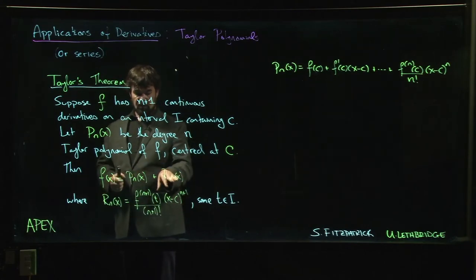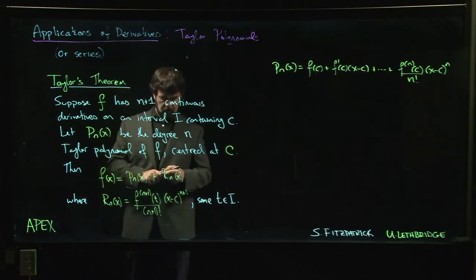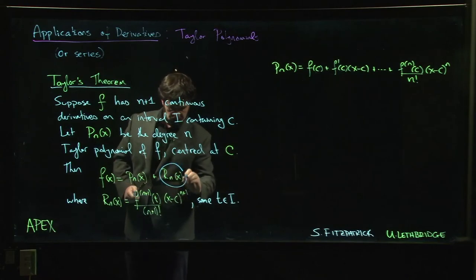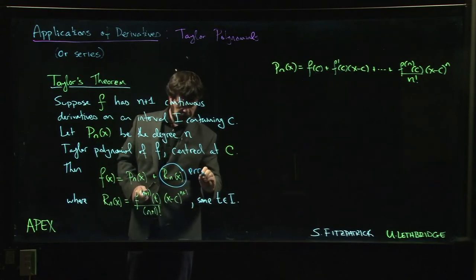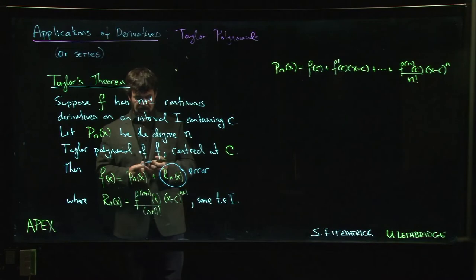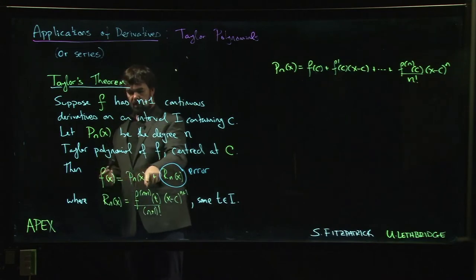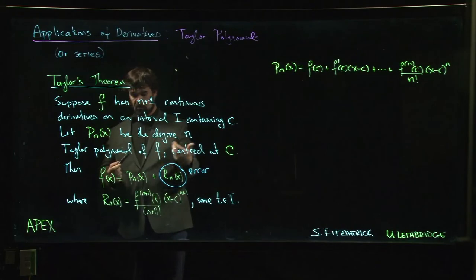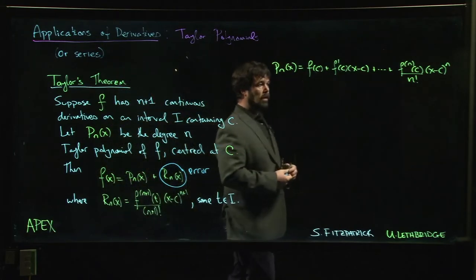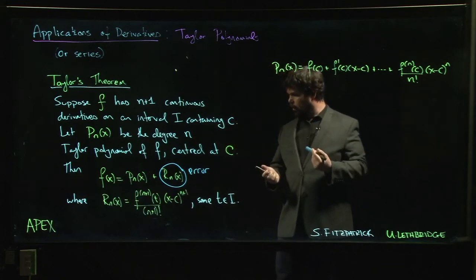Notice it's equals here, it's not an approximation. This remainder should be thought of as your error term. It's telling you the difference between the original function and the Taylor polynomial.